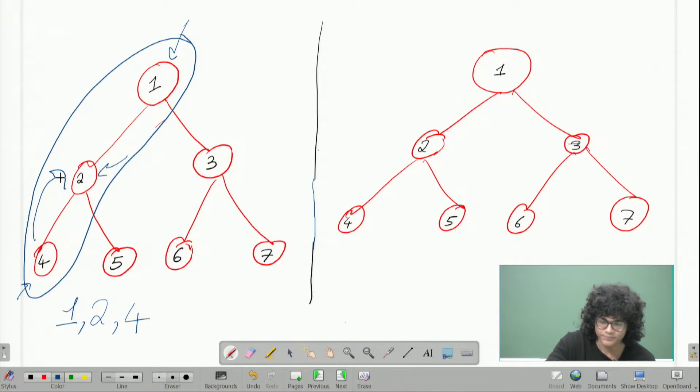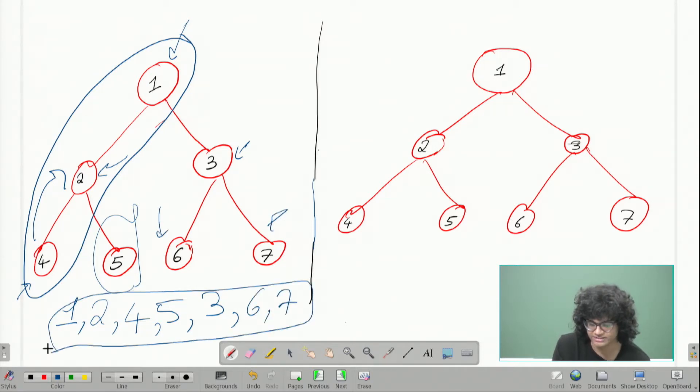So we move on to the next step. So we come back here. And we see two has another child five. So we get five. And now this depth that is one, two, and five, this depth has been traversed completely. Then we go to the sibling of two, there is three. So three, and then similarly, just like in the previous case, we get six and seven. So this is the DFS order.